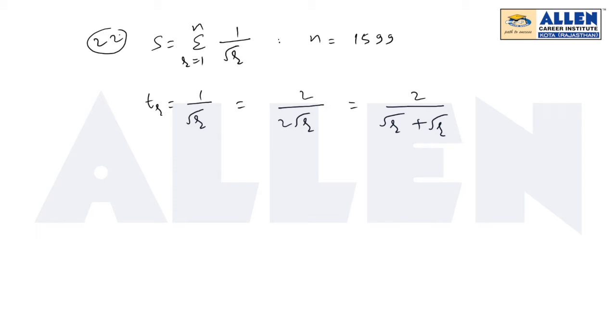Now for its upper limit, I can write if I replace one root r by the smaller quantity like r minus 1. Upon rationalization it will become 2 times root r minus root(r minus 1).